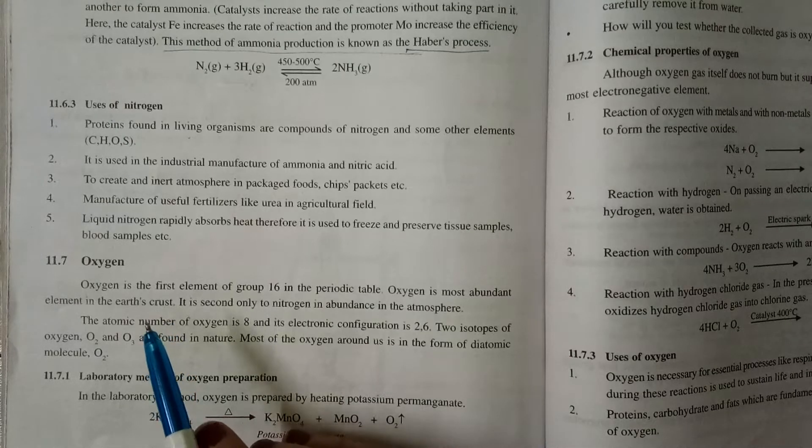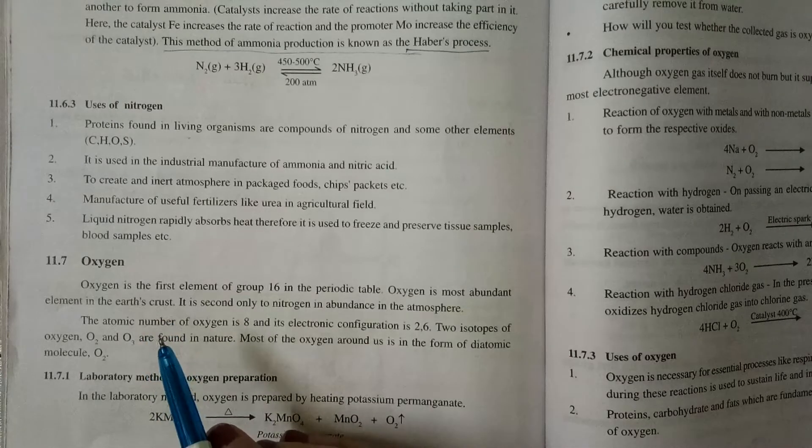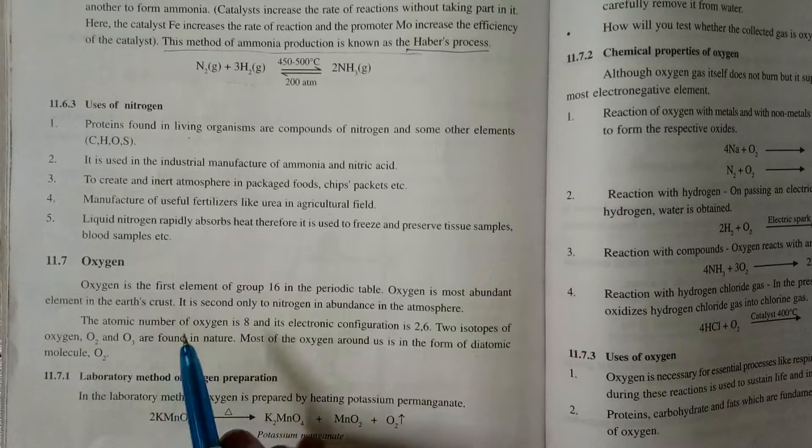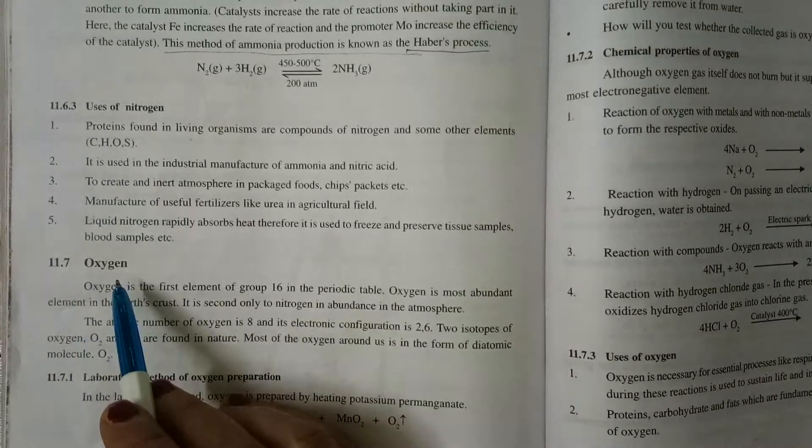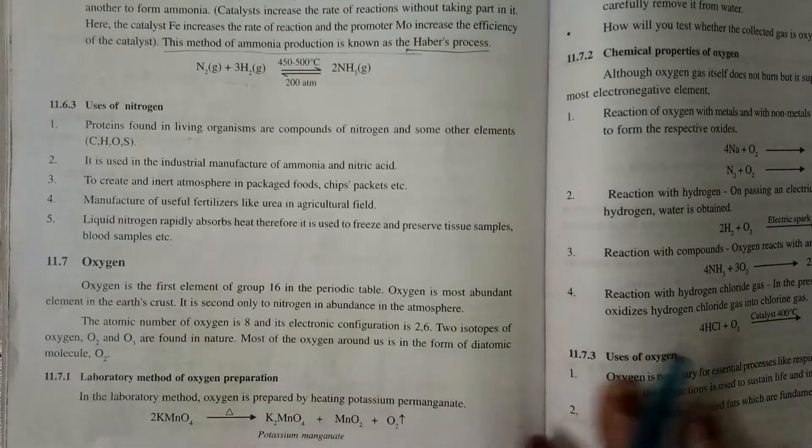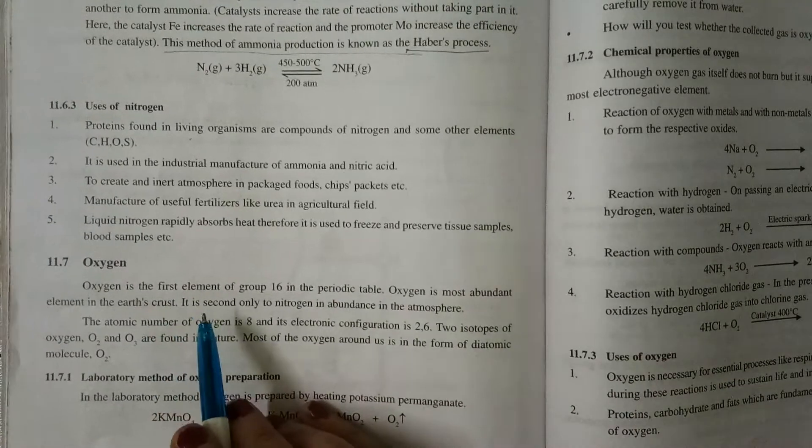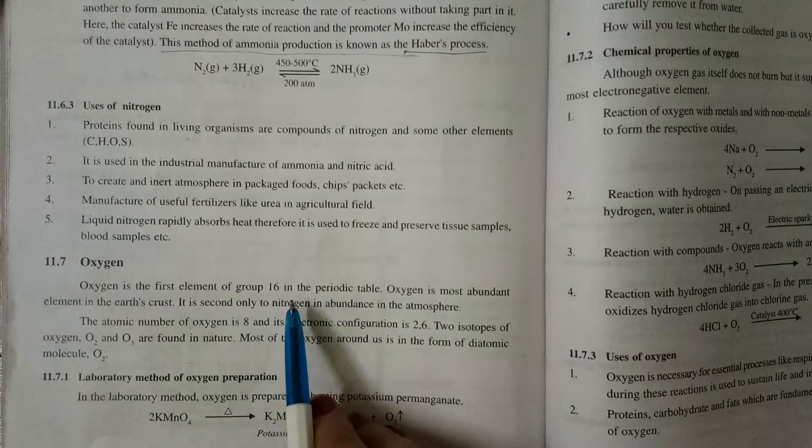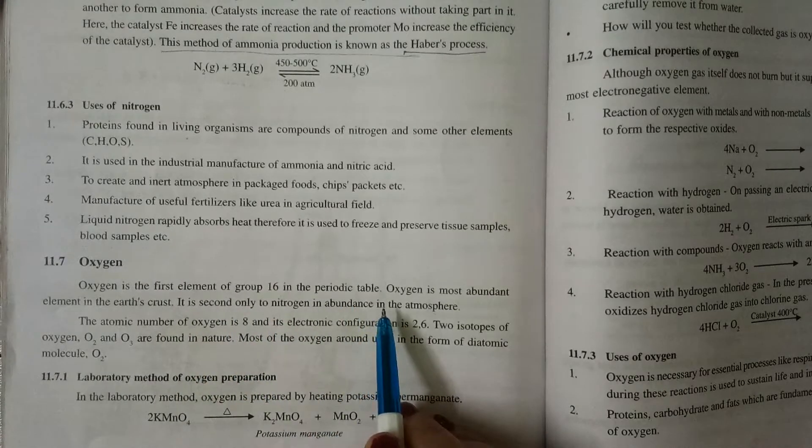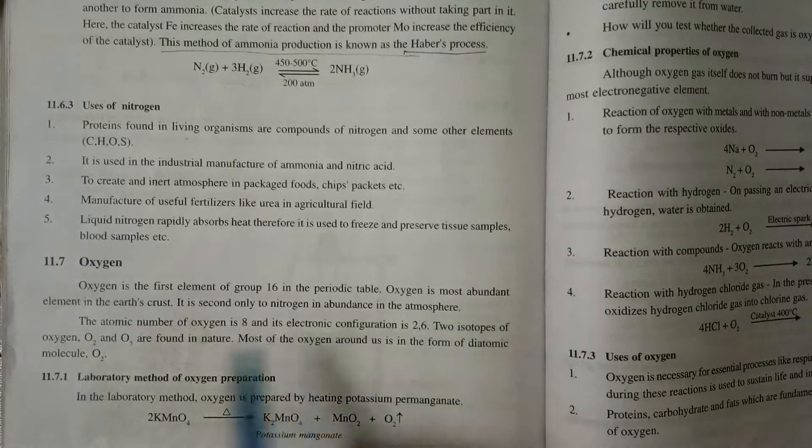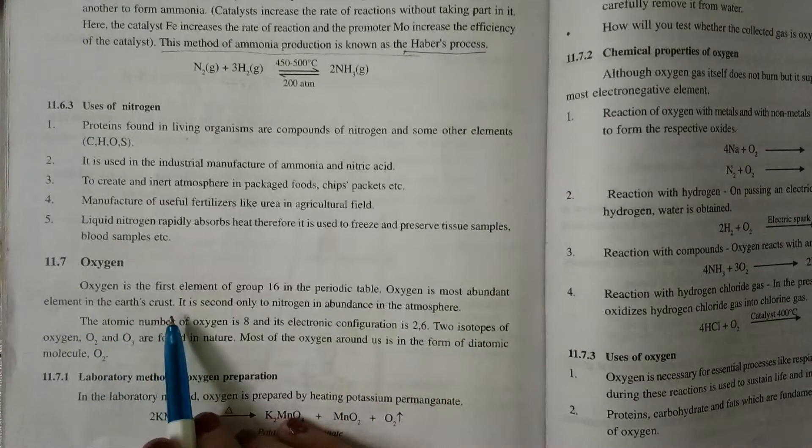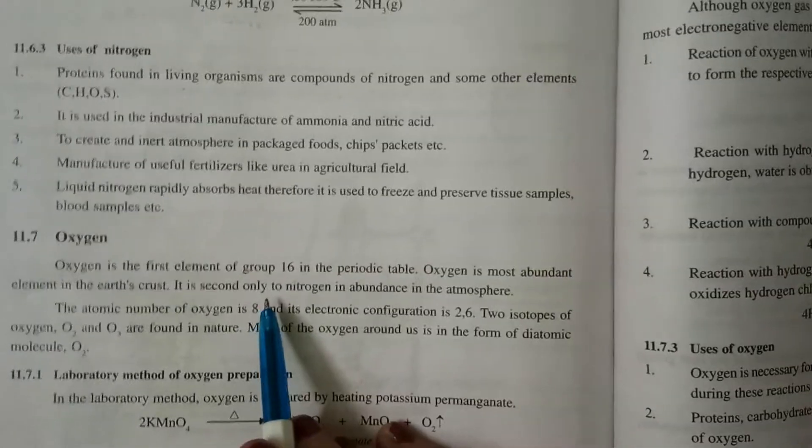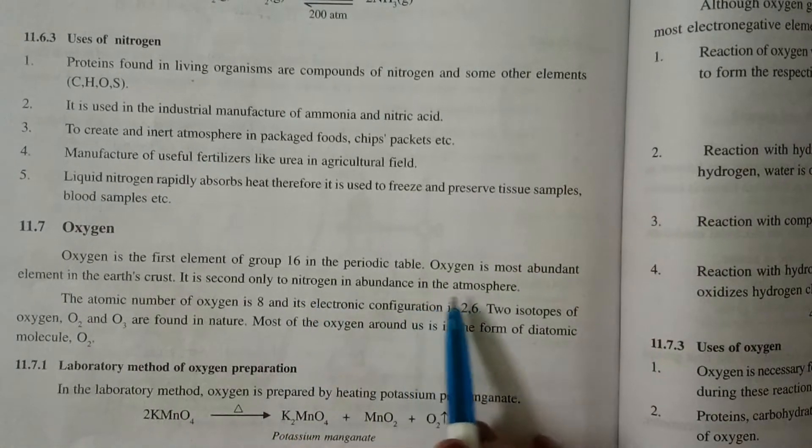Hello students, I am Ruchira Mukherjee. We are studying chemistry of non-metals and today I am going to tell you about oxygen which is a non-metal. Oxygen is the first element of group 16 in the periodic table. Oxygen is most abundant element in the earth crust. It is second only to nitrogen in abundance in the atmosphere.